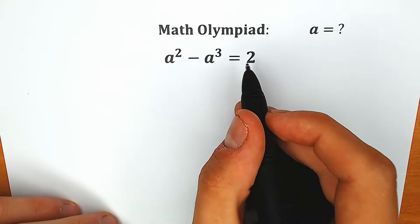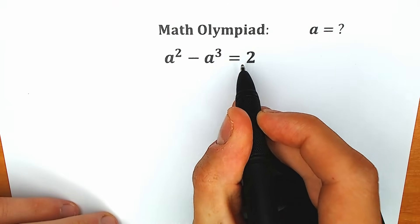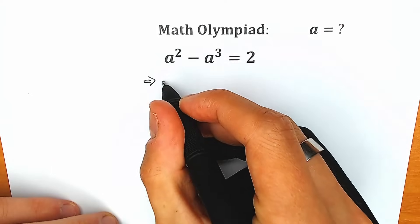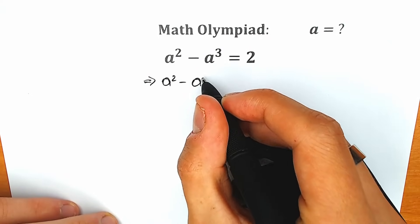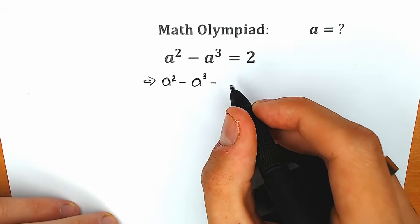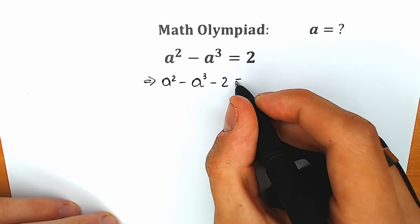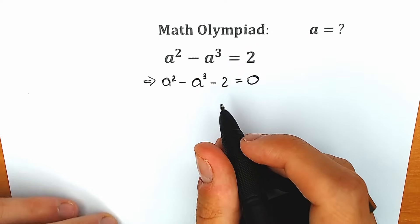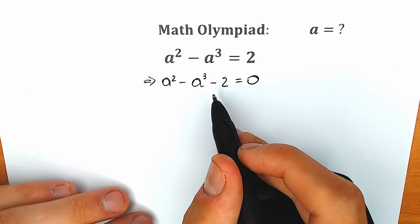Right now let's rewrite this question. Let's subtract 2 from both sides — let's write this 2 on the left side. So this is our first step. As a result we have a squared minus a cubed minus 2 equal to zero. This is our cubic equation, so right now let's try to group something.